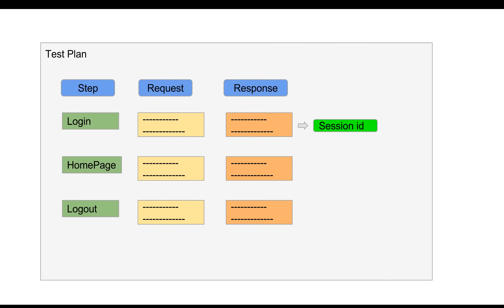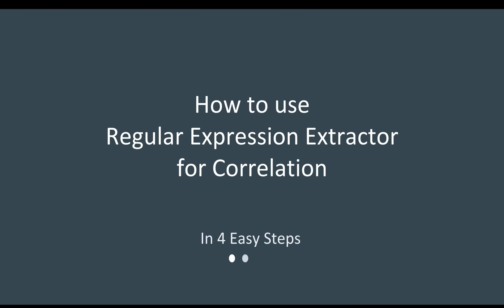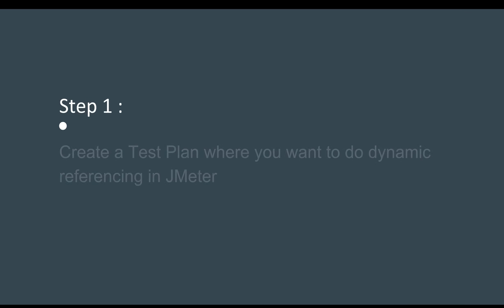Since the session ID is dynamic, you cannot store it in a static way and refer it in subsequent steps. It has to be extracted during runtime and then given as a reference to other steps. The home page should get the session ID from the login step, and then other pages as well. This is why we need dynamic referencing, or correlation. Let us understand how to use the regular expression extractor for correlation in JMeter.